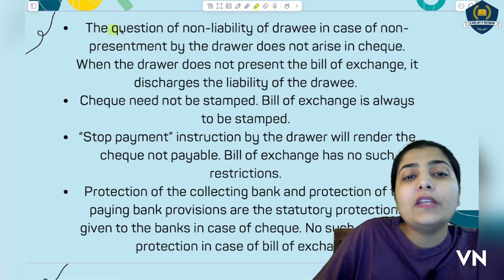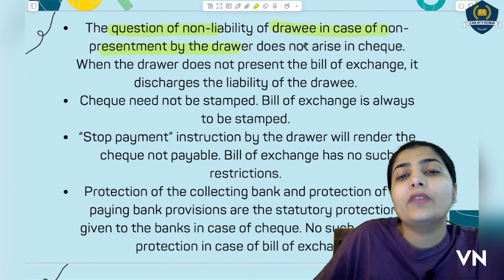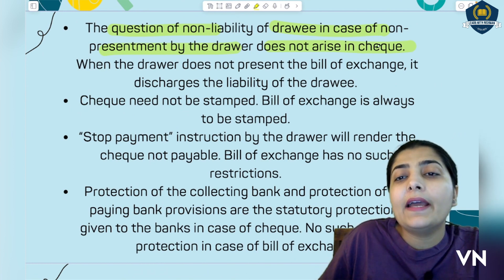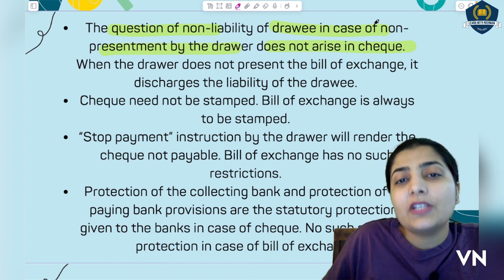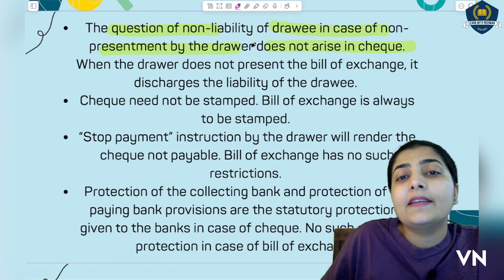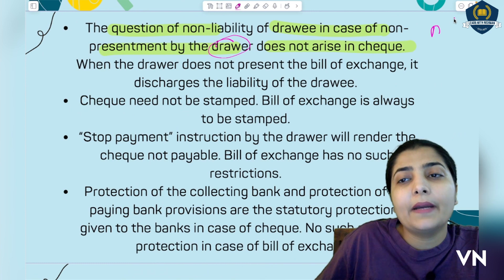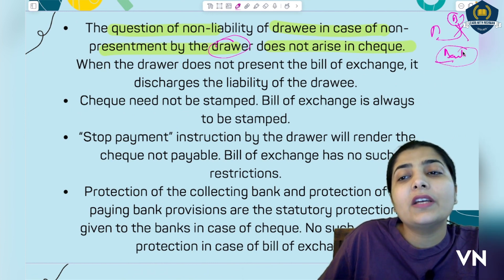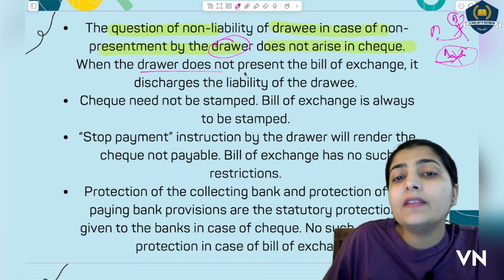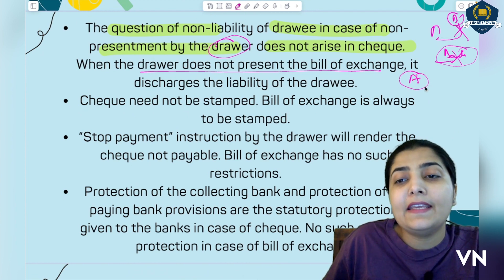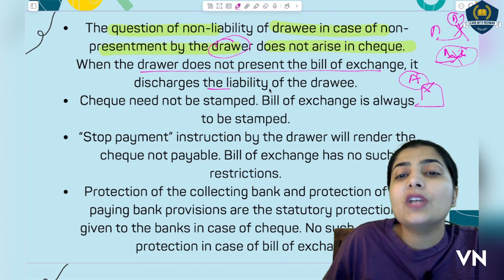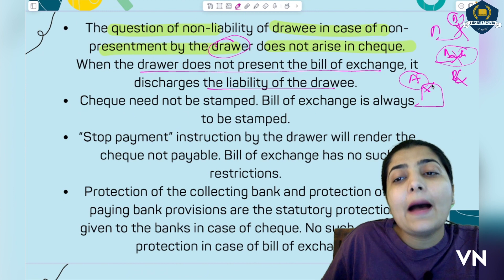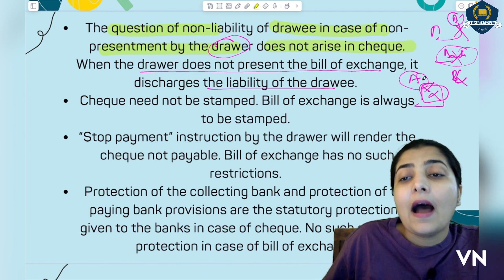The next difference: the question of known liability of the drawer in case of non-presentment does not arise in cheque. In cheque, if the payee does not present the cheque to the bank, that doesn't mean the bank also escapes liability — the bank has no role if B doesn't want to pay. But in bill of exchange, if the drawer does not present the bill, it discharges the liability of the drawer. If A does not draw the bill, why would B pay? A needs to draw and present the bill of exchange to enforce payment.